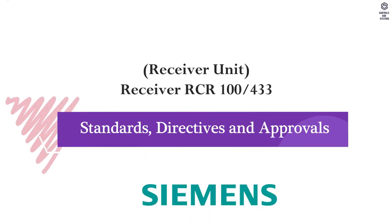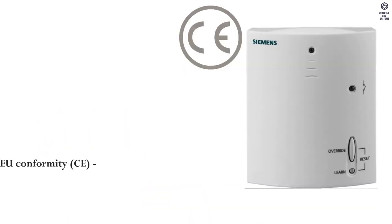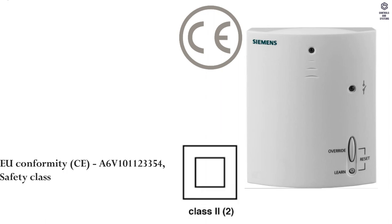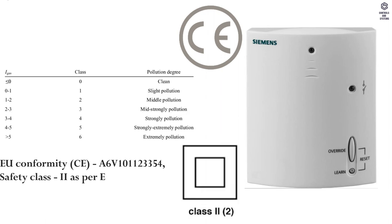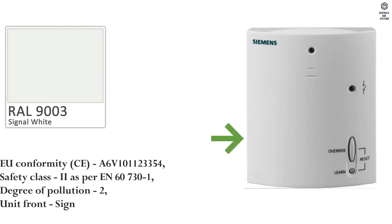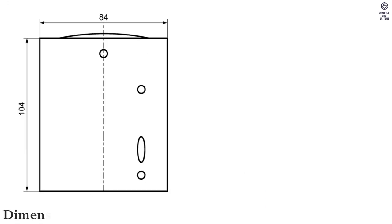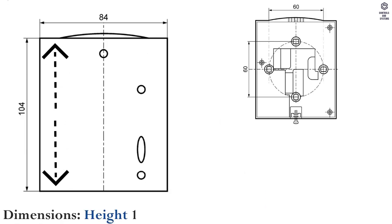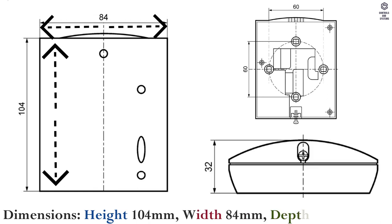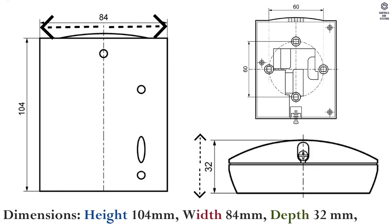Standards, directives and approvals for receiver: EU conformity CE, safety class 2, pollution degree 2. Unit front is signal white RAL 9003; base is gray RAL 7035. Dimensions: height 104 mm, width 84 mm, depth 32 mm.